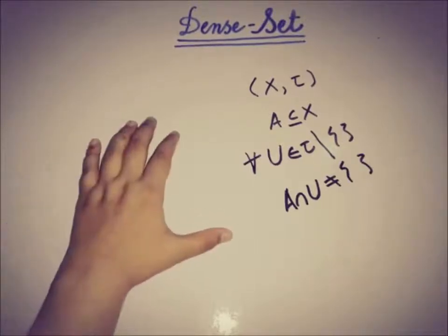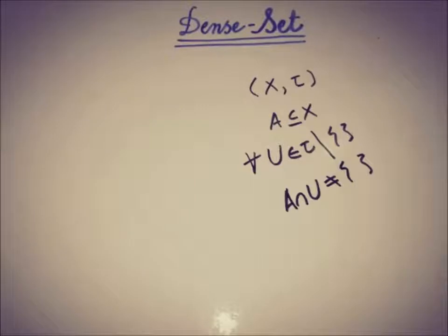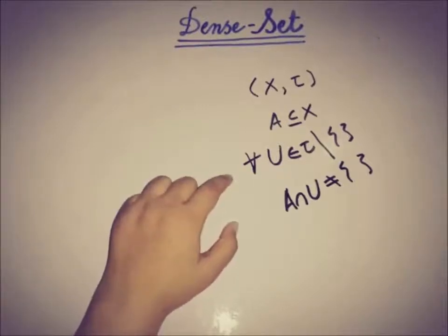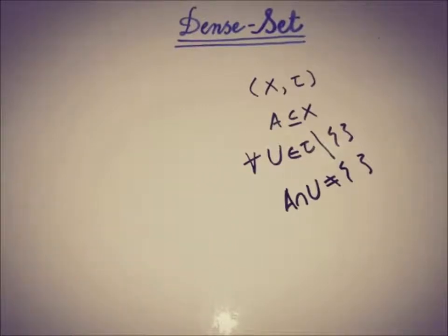A is said to be a dense set in X if the intersection of every non-empty open set, or elements of τ, with A is non-empty. So if any set satisfies this property, then we can say it's a dense set.